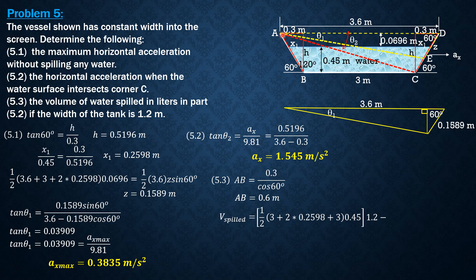Then minus volume retained which is bounded by ABC. The area of ABC is one half AB 0.6, BC 3, then sine of included angle 120 degrees. That's the area, then times 1.2. So one half of 0.6 times 3 sine of 120 degrees times 1.2.